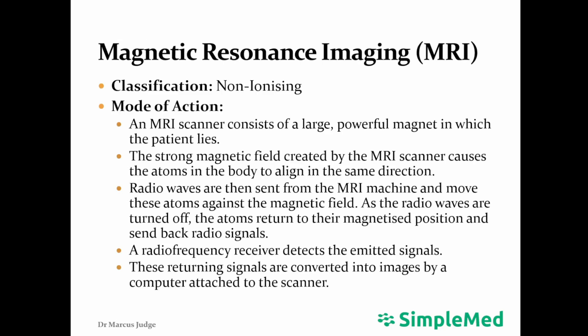Finally, we come on to magnetic resonance imaging, or MRI. This is a non-ionizing form of scan. An MRI scanner is a large, powerful magnet in which the patient lies. This powerful magnet causes all of the hydrogen protons found in water and fat in the body to align in the same direction. Radio waves are then sent from the MRI machine, causing all of these protons to align against the magnetic field. When the radio waves are turned off, the protons return to their original position and send back radio signals. A radio frequency receiver detects these emitted signals, and these are processed and created into a high-resolution 3D image.